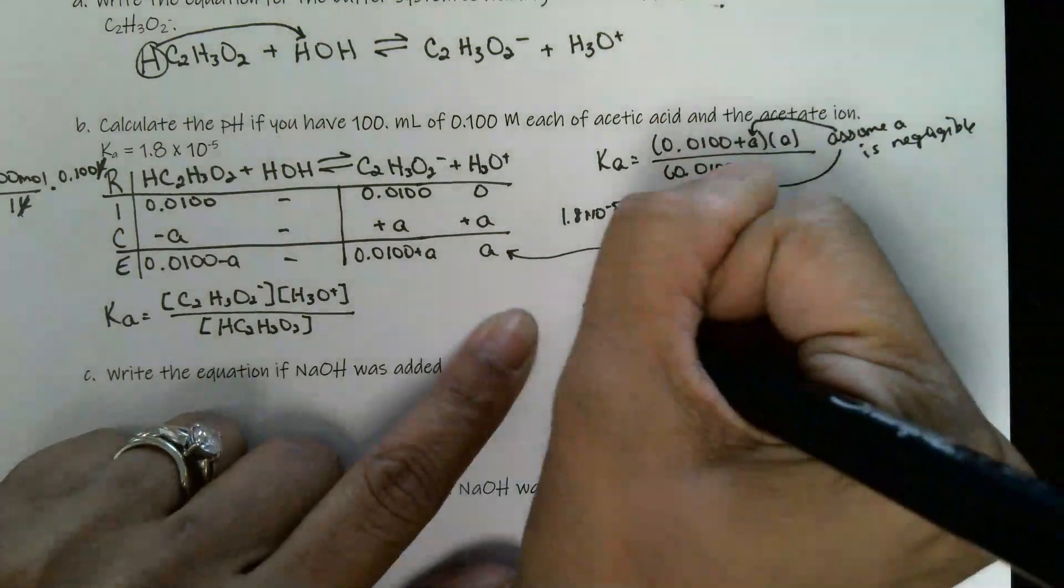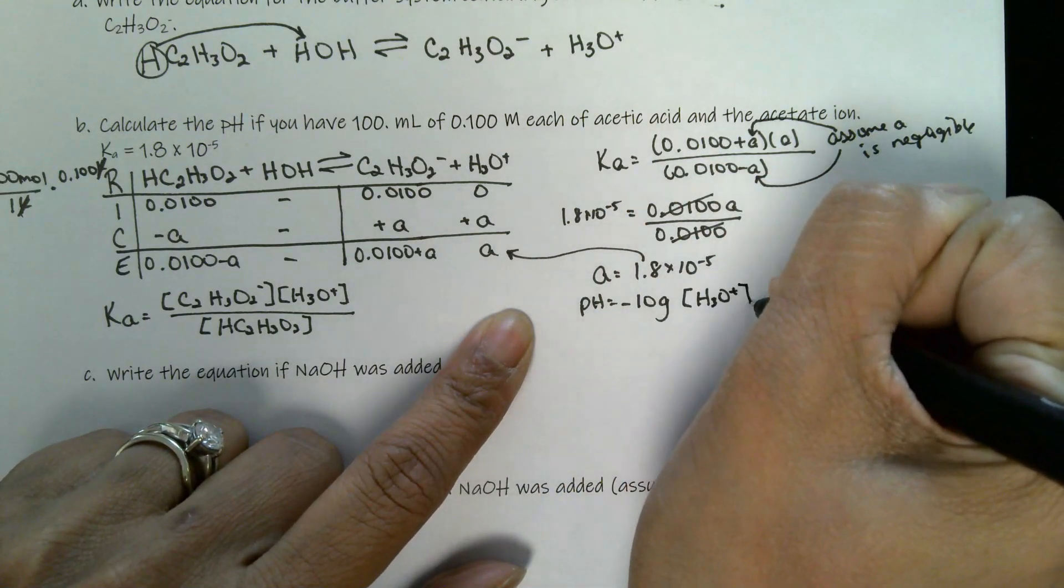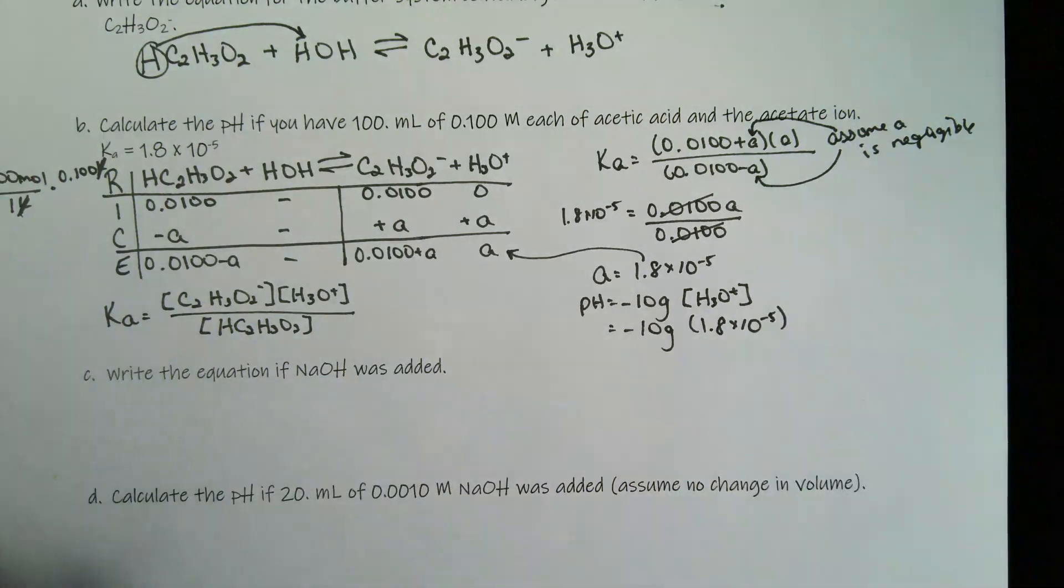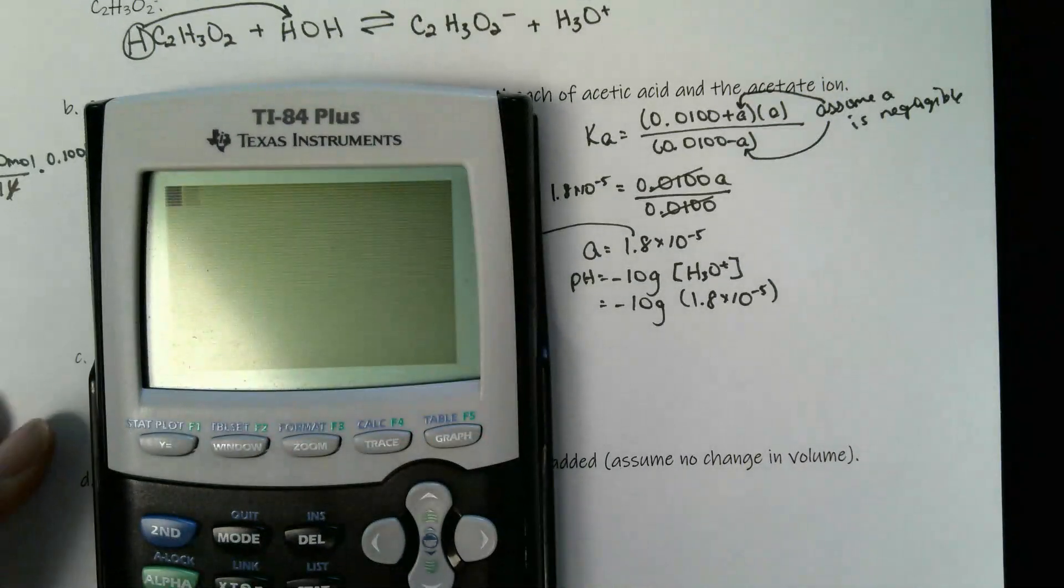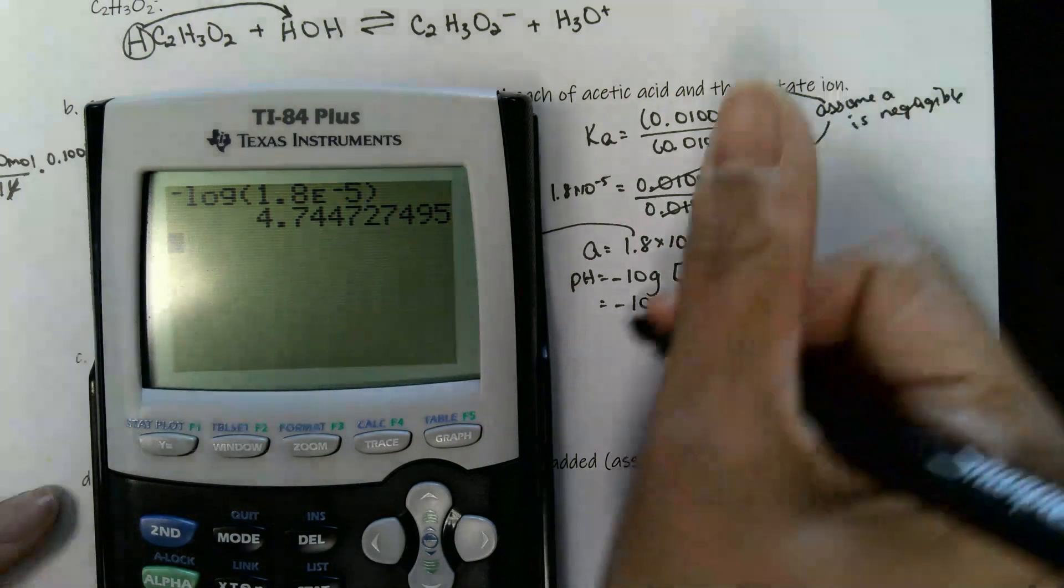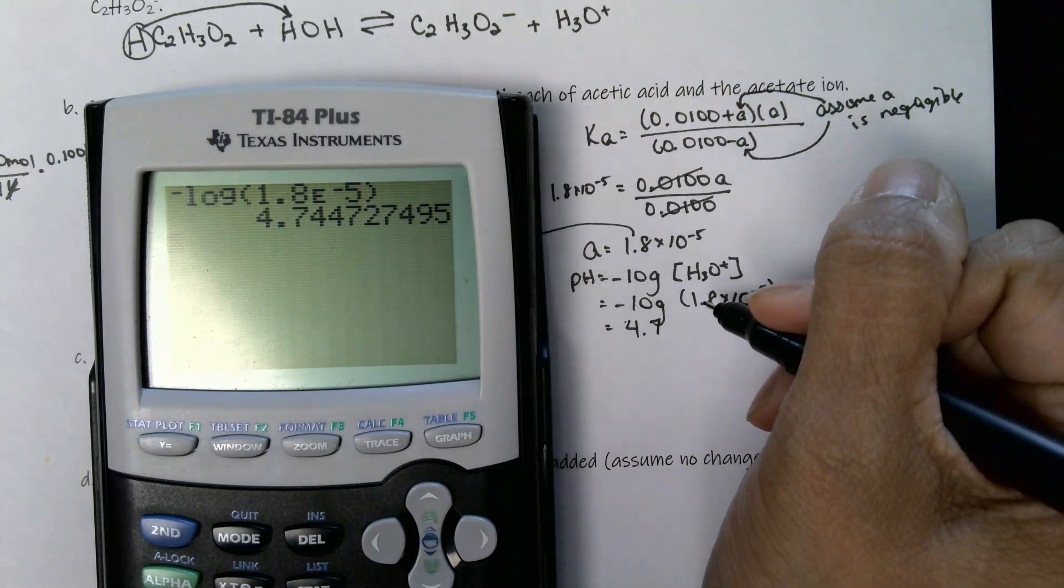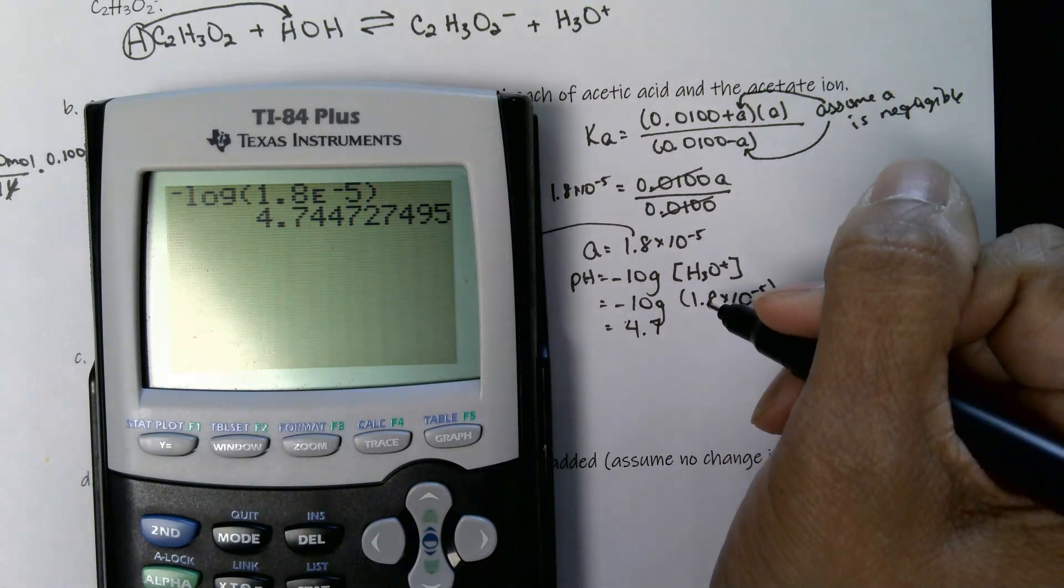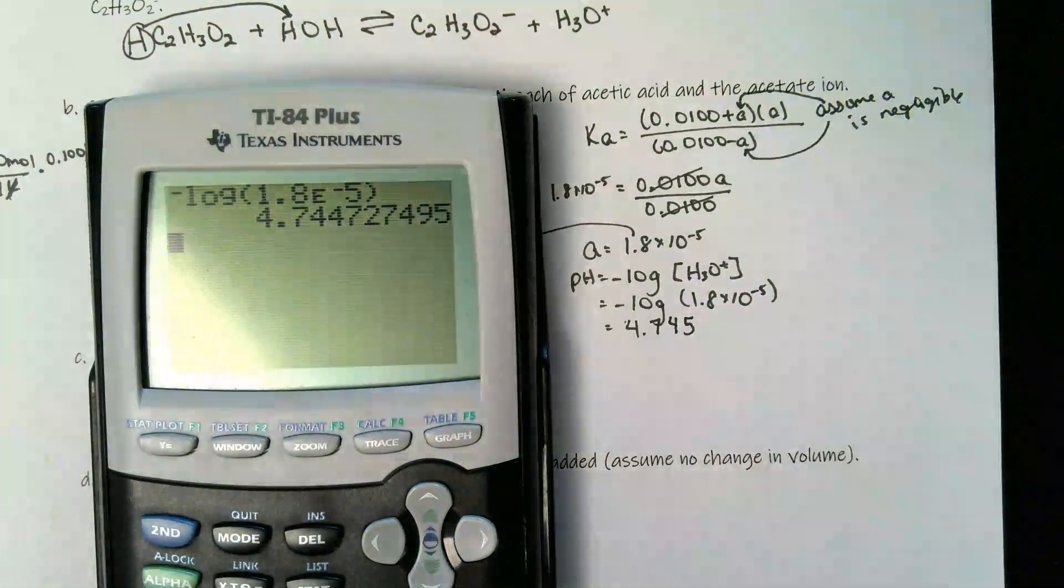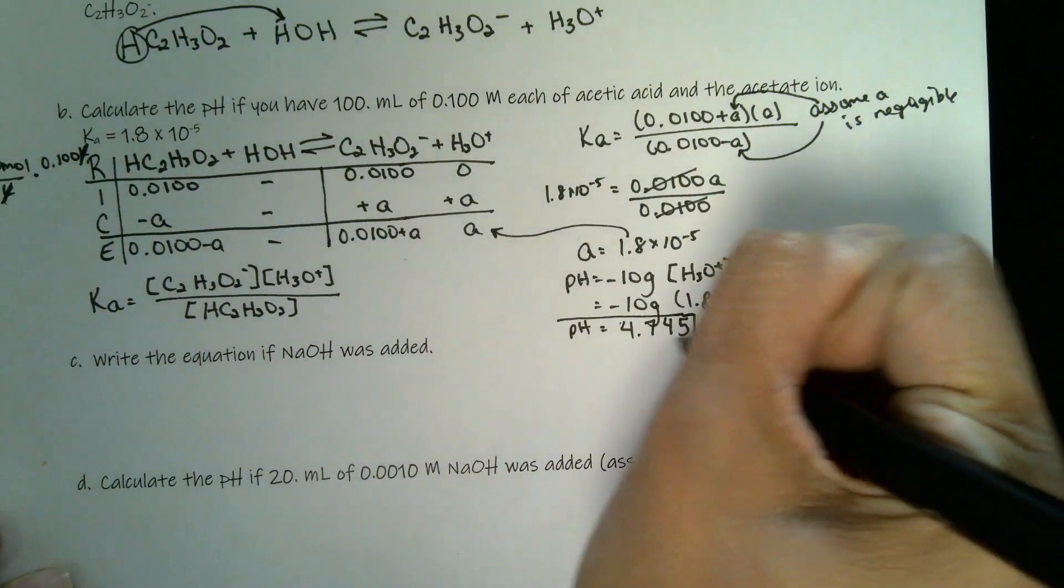My Ka from over here was 1.8 times 10 to the negative fifth. If then I have 0.0100, this one's negligible, but I'm multiplying it by this A over 0.0100. There is no more A to be had here. Those cancel. So A is equal to 1.8 times 10 to the negative fifth. We want to find the pH though. So the pH is equal to the negative log of the H3O plus concentration. So that negative log of 1.8 times 10 to the negative fifth. And to remind you how to do this, negative log, 1.8, E button, negative five. And this gives us 4.745. I'm going to do way more sig figs than we need just to show you how slight of a change some of these things might be. So that's my pH for this first buffer solution.